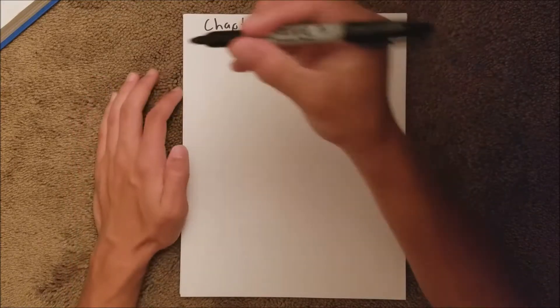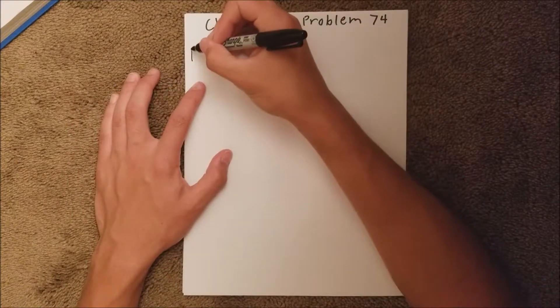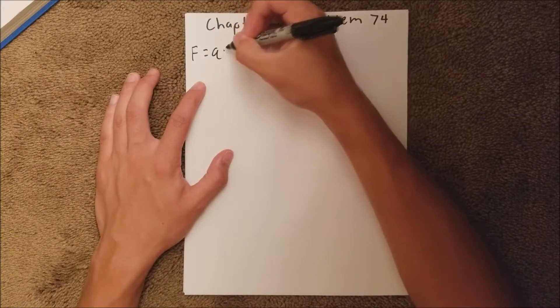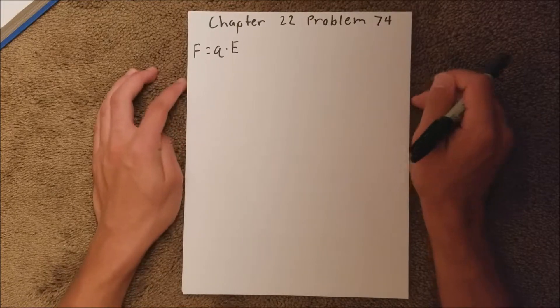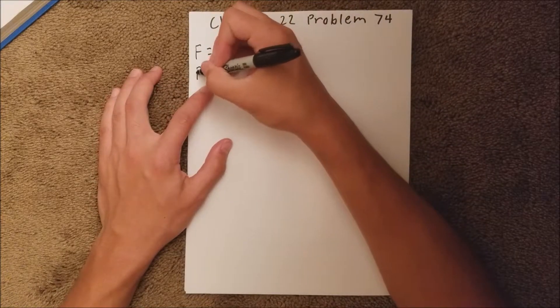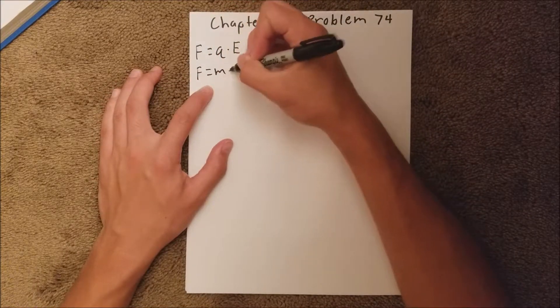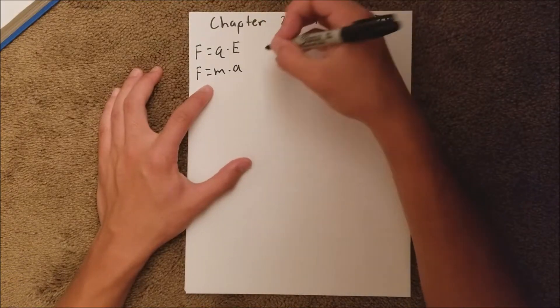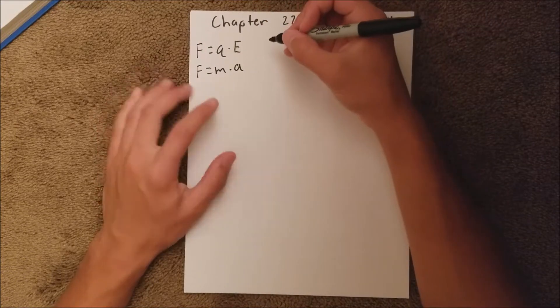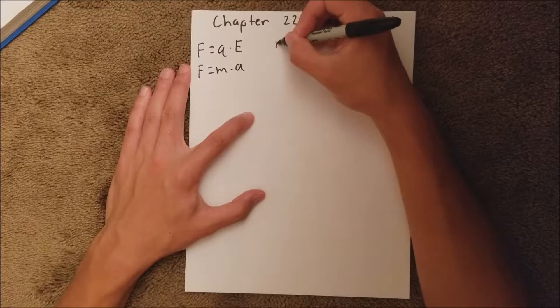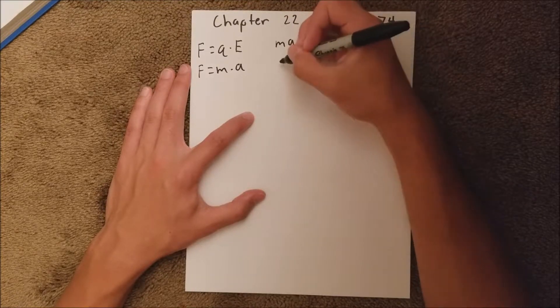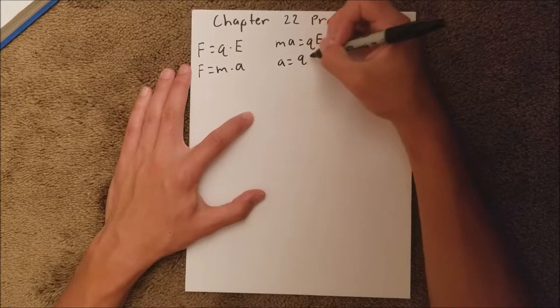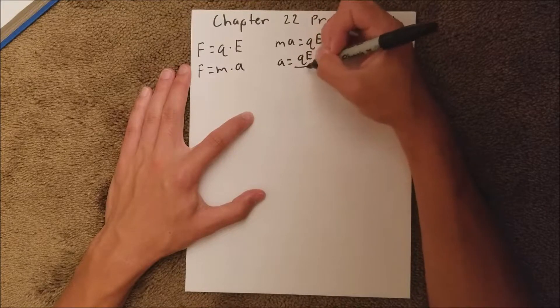We know that force is equal to charge times the electric field, and we also know that force is equal to mass times acceleration. So we can set those two equal to each other, and say M A equals Q E, and then solve for acceleration, A equals Q E over M.